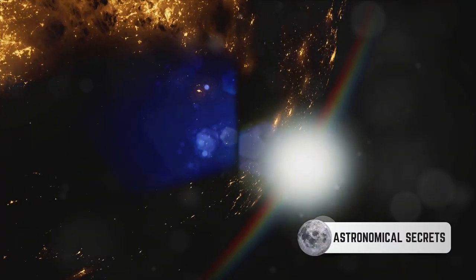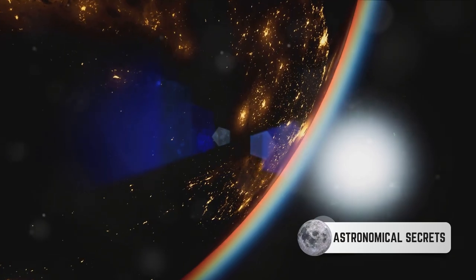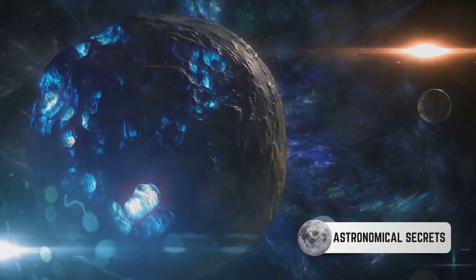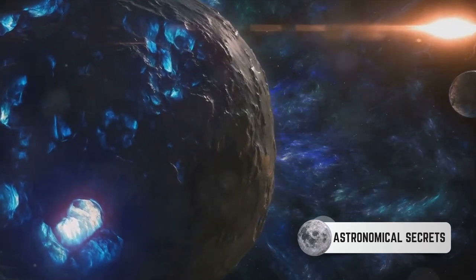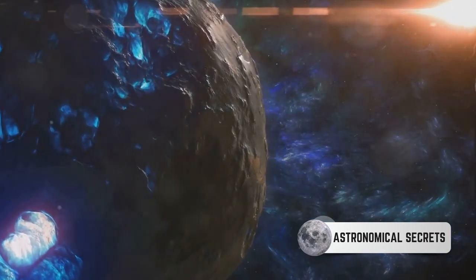They observe how bright the supernova appears from Earth, and knowing how luminous it should be, they can calculate its distance. It's a bit like figuring out how far away a ship is at sea by how low it sits on the horizon.